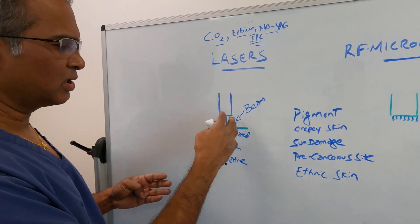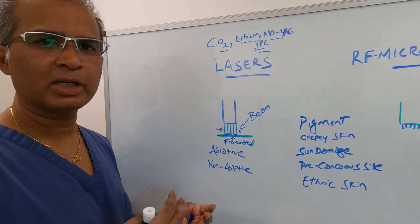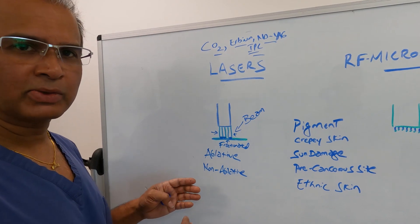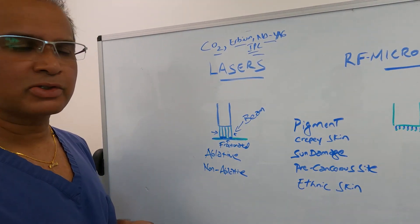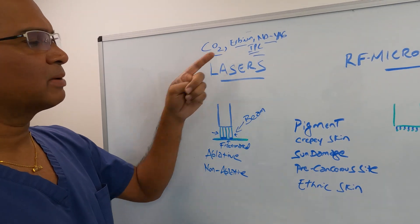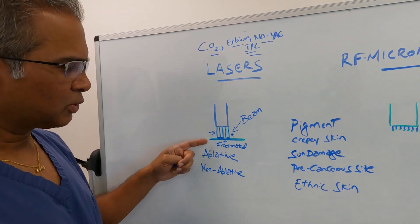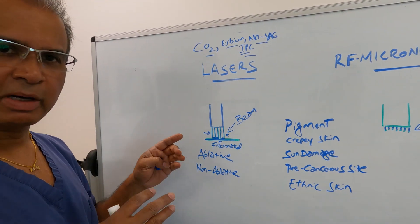You're leaving healthy skin all around the beam so that the healing is much faster. It's a lot less aggressive, a lot less downtime, and if you do it over two or three, four sessions, you essentially cover the whole skin. This is the most common way today lasers are used, whether it's a CO2 laser, Erbium laser, or whatnot.